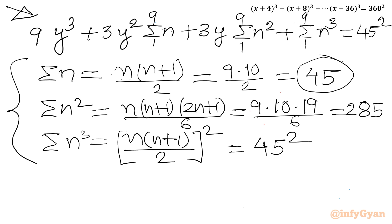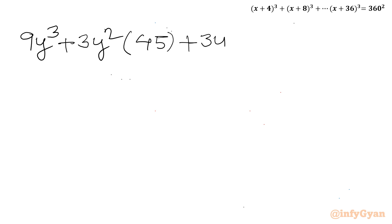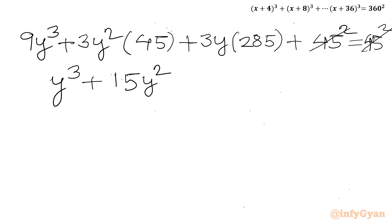Applying all the values: 9y³ + 3y²·45 + 3y·285 + 45² = 45². The 45² terms cancel from both sides. The remaining equation is divisible by 9, so dividing by 9 gives: y³ + 15y² + 95y = 0.